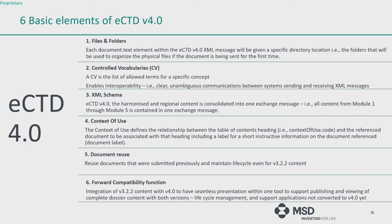Moving on to eCTD version 4.0 — it is not yet mandated throughout the world, and technical pilots are still running. The same six basic element concept from version 3.2.2 is applied here: files and folders, controlled vocabularies, XML, context of use, document reuse, and forward compatibility. Files and folders: once something is submitted, the eCTD 4.0 XML message will contain coding stating where it sits within the granularity.